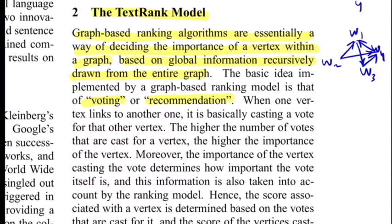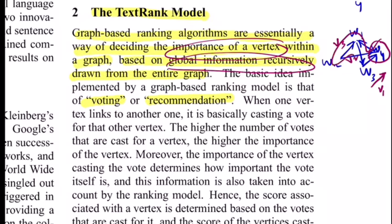This is how you create this voting or recommendation based web graph where each of the nodes are web pages. The importance of a vertex is based on global information. If we want to know how important W4 is, we can see that a vote is cast from W3, W1 cast a vote to W3, and W2 also casts a vote to W1. You can easily see a recursion being formed for how things propagate from one end to another. That's why they use the word global information.